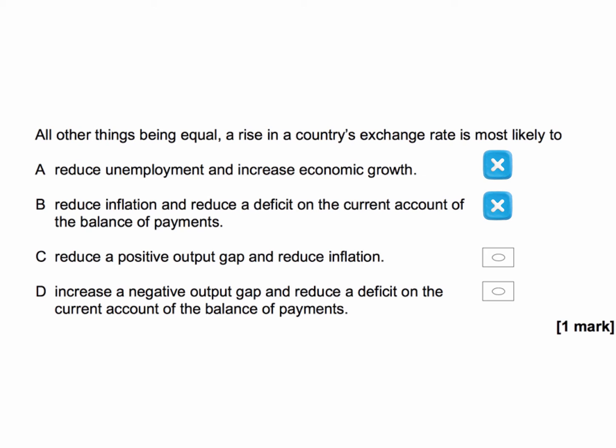What about C: a rise in the exchange rate will reduce a positive output gap and reduce inflation? A positive output gap is where actual GDP is higher than potential GDP and can create demand-pull inflationary pressure. This is right — a rise in the exchange rate will bring down aggregate demand and therefore close the positive output gap. And because it reduces the price of imports and squeezes demand, it will reduce inflation. So C is the right answer.